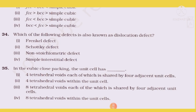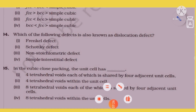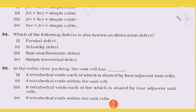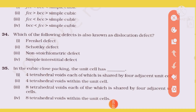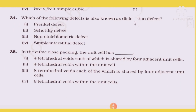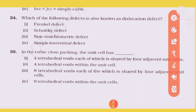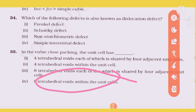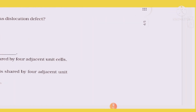Question 34: Which defect is also known as dislocation defect? The answer is Frenkel defect — it is also called dislocation defect. In a cubic close packing unit cell, there are 8 tetrahedral voids within the unit cell.